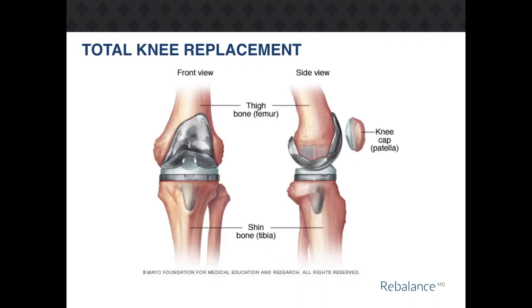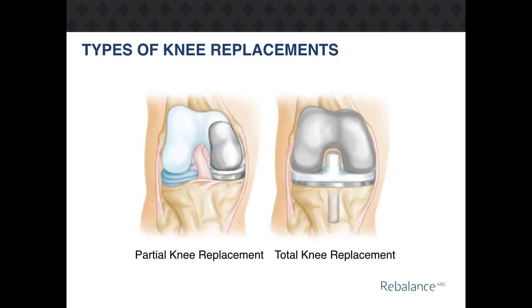The prosthetic used to replace your knee consists of multiple parts. These include a femoral prosthetic, a tibial prosthetic which is separated by a plastic liner, as well as a patellar button which is fixed to the back of the kneecap. Your surgeon may recommend either partial knee replacement or total knee replacement, depending on the location of degenerative change as well as other patient factors.